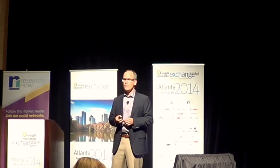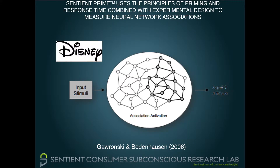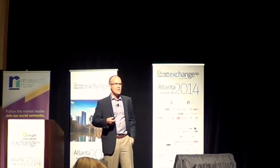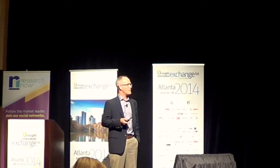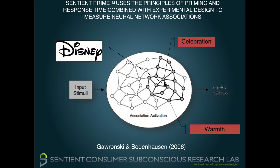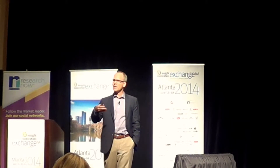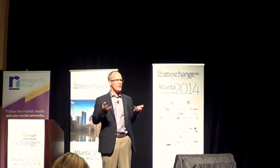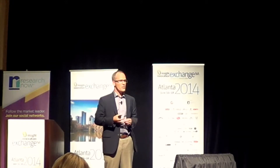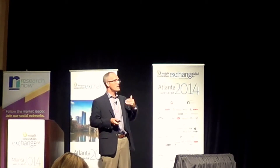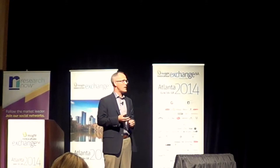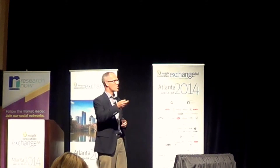Just like the white bear, when we show you Disney, you have automatic associations with that brand — for example, celebration, warmth, childhood, security. When you are primed with the Disney brand, those associations become more accessible. We've known in marketing that we want our brands to be top of mind, but now we have a neural basis for that. The strength of those associations can be characterized as your implicit attitude toward that brand, and they influence your behavior toward or away from it.